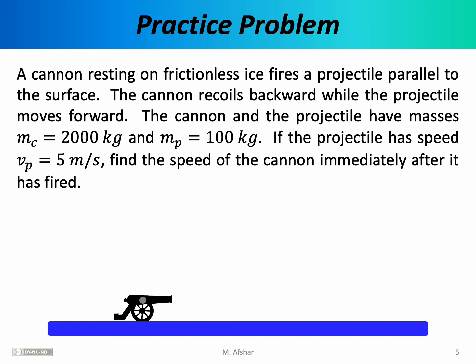Let's wrap up this lecture with a relatively simple problem involving the conservation of momentum. A cannon resting on frictionless ice fires a projectile parallel to the surface. The cannon recoils backward while the projectile moves forward. The cannon and the projectile have masses of 2000 and 100 kilograms. If the projectile has a speed of 5 meters per second, find the speed of the cannon immediately after it has fired. What we have is a cannon and a projectile — the cannonball — inside the cannon. Once fired, the projectile moves forward in the positive x direction at 5 meters per second, while the cannon itself will recoil in the negative x direction.